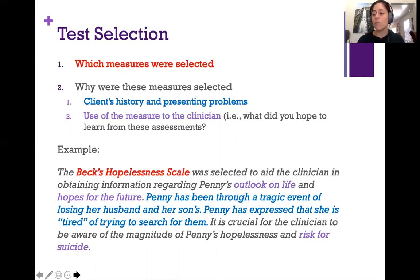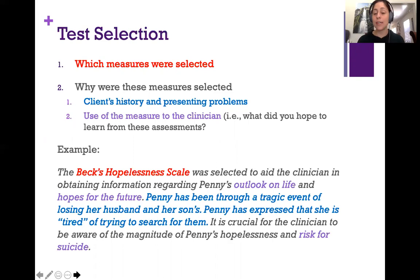I've provided an example of what this might look like in narrative form, with each piece highlighted. In red, which measure was selected — the Beck Hopelessness Scale. In blue, the client's history and presenting problem: Penny has been going through the tragic event of losing her husband and son, and has experienced feeling tired of trying to search for them — explaining why we'd look at hopelessness. In purple, why the clinician is using the measure: to get information about outlook on life, hopes for the future, and risks for suicide. You would complete this narrative for each of the measures you've selected.